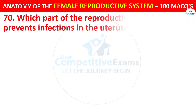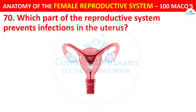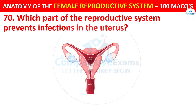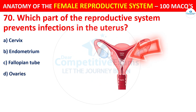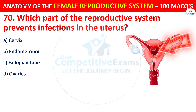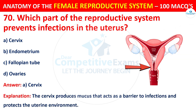Question number 70. Which part of the reproductive system prevents infections in the uterus? Options: cervix, endometrium, fallopian tube, or ovaries. The correct answer is A — the cervix. The cervix produces mucus that acts as a barrier to infections and protects the uterine environment.